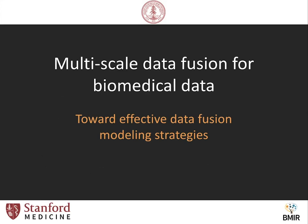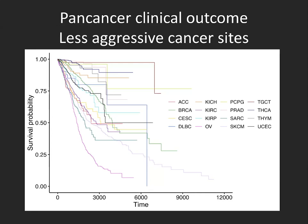Now let me turn to the next project: a broader framework for multiscale data fusion using biomedical data. Again, we used data from the Cancer Genome Atlas. What I'm showing here is the least aggressive cancers — 16 cancer sites within TCGA — and their overall survival data.